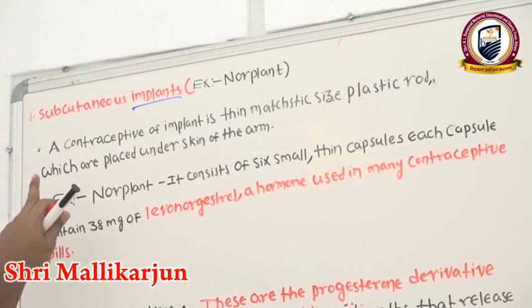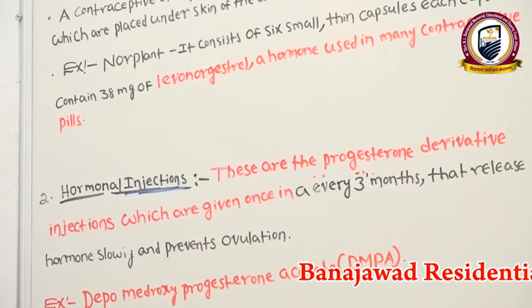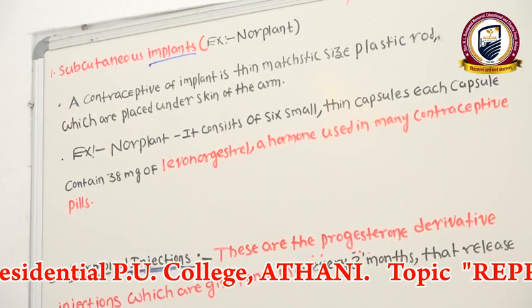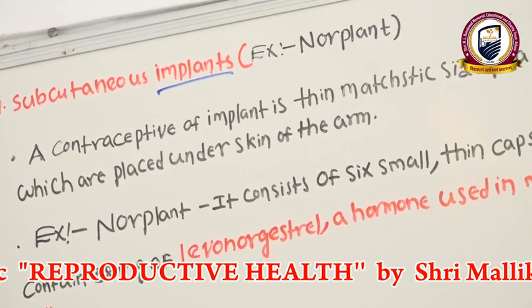Subcutaneous implants — 'subcutaneous' means under the skin. We place these devices under the skin for long-releasing medication. The key difference between implants and injections versus oral contraceptives is that implants and injections provide long-duration drug release, whereas oral contraceptives work for only a short duration of time.